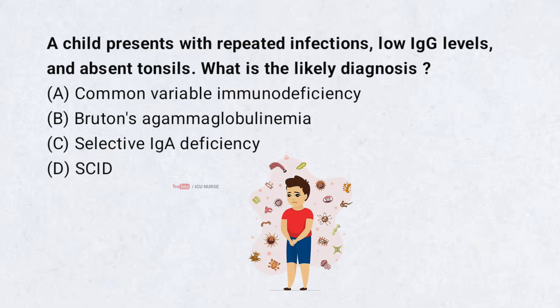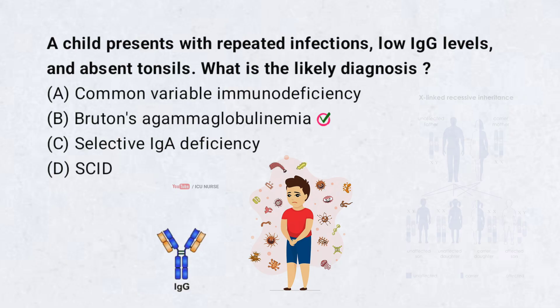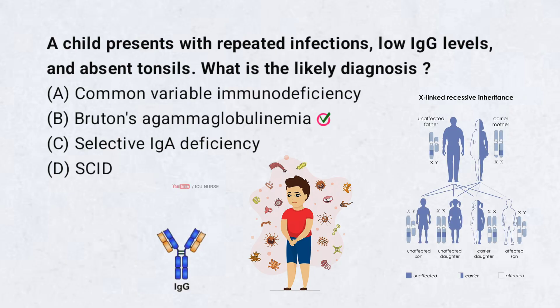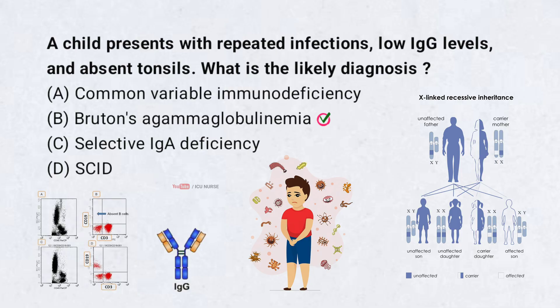A child presents with repeated infections, low IgG levels, and absent tonsils. What is the likely diagnosis? A. Common variable immunodeficiency, B. Bruton's agammaglobulinemia, C. Selective IgA deficiency, D. SCID. Correct answer: B. Bruton's agammaglobulinemia. Bruton's agammaglobulinemia is an X-linked disorder affecting boys. Due to absence of mature B-cells, they have low immunoglobulin levels and no visible tonsils or lymph nodes. Infections begin after maternal antibodies wear off.